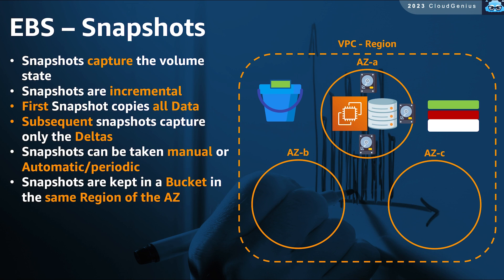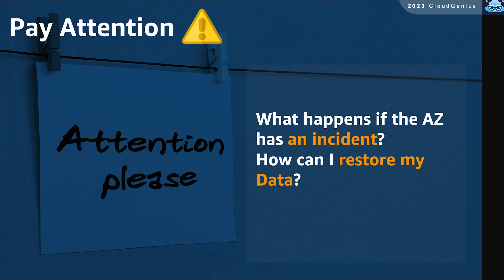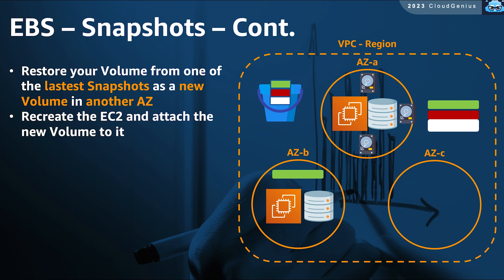Snapshots are useful in case of accidental data deletion. If someone deletes files on your machine, you can use snapshots as recovery points to restore your volume from one of the snapshots as a new volume, mount it, locate the deleted files, then copy them. Snapshots are kept in a highly available storage location — a bucket stored in the region of the AZ of the EBS volume multiple times. If one complete AZ becomes unavailable, snapshots come to the rescue: because the snapshot is stored in a highly available way in the region, you can restore that snapshot as a new EBS volume in one of the other available AZs, rebuild your EC2, connect the new volume to it, and resume operations.